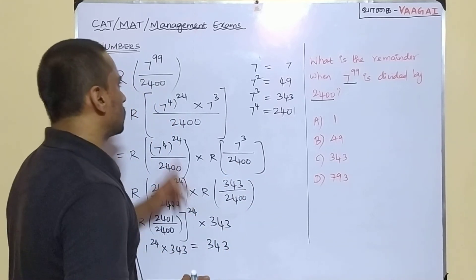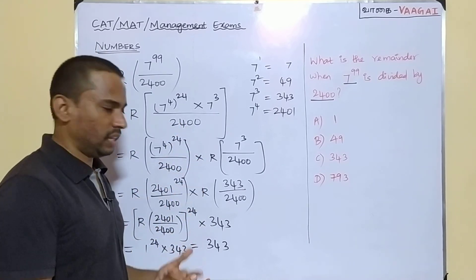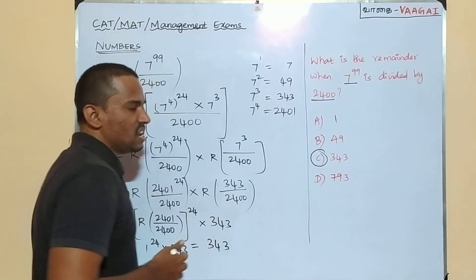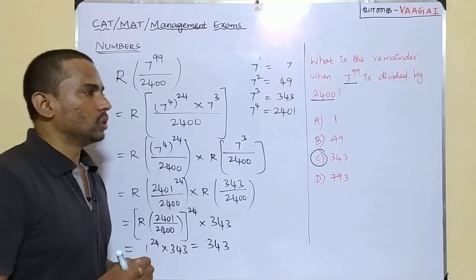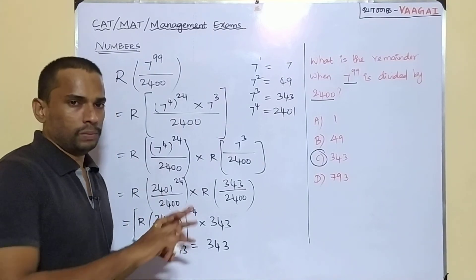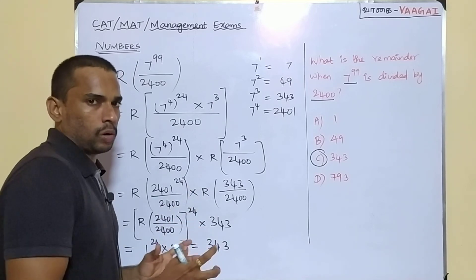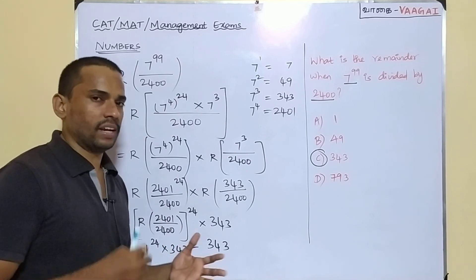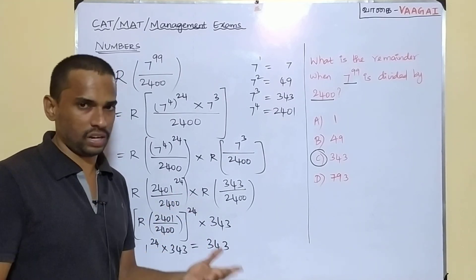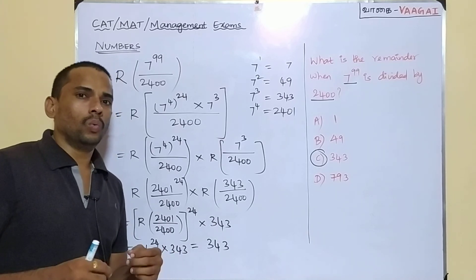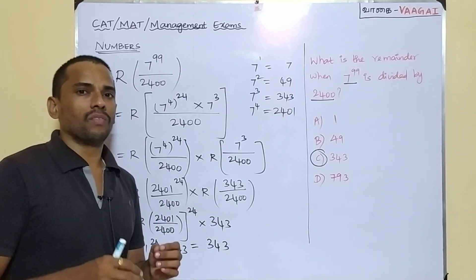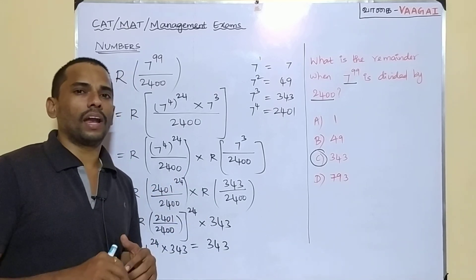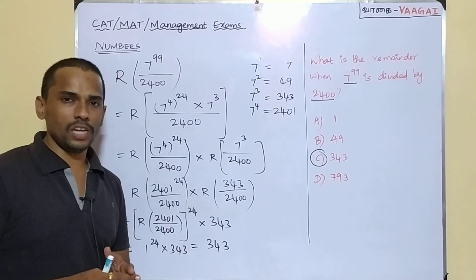So the remainder when 7 power 99 is divided by 2400 is 343, which is available at option C. I hope the approach we carried to solve this problem is clear. If you found this useful, please do share this video with your friends. We will catch up in the next session with some other interesting questions — see you soon, thank you so much.